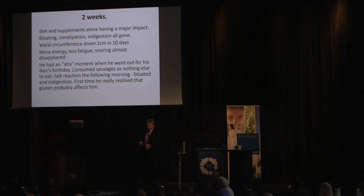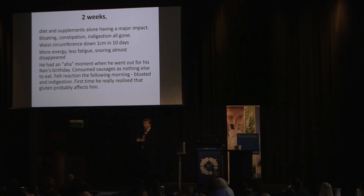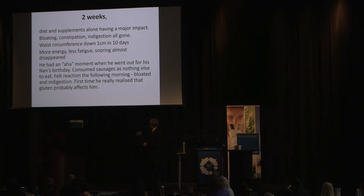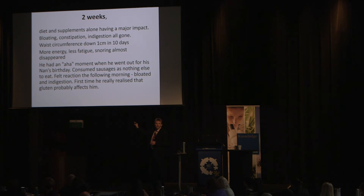Two weeks in, diet and supplementation alone were having a major impact. His bloating, constipation, and indigestion were gone. Waist circumference down one centimeter; more energy, less fatigue; snoring almost disappeared. The BBC paid 800 pounds to book a sleep apnea clinic 14 days after we started — when he got there, he didn't have any. Two weeks in, his sleep apnea is gone. He had an aha moment eating sausages containing gluten at his nan's birthday — he recognized it made him feel worse. At that point he was no longer thinking this is woo-woo.